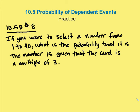All right, so the question is, if you were to select a number from 1 to 40, what is the probability that it is the number 15 given that the card is a multiple of 3? Well, what we first need to do is find out how many multiples of 3 there are in 1 through 40.